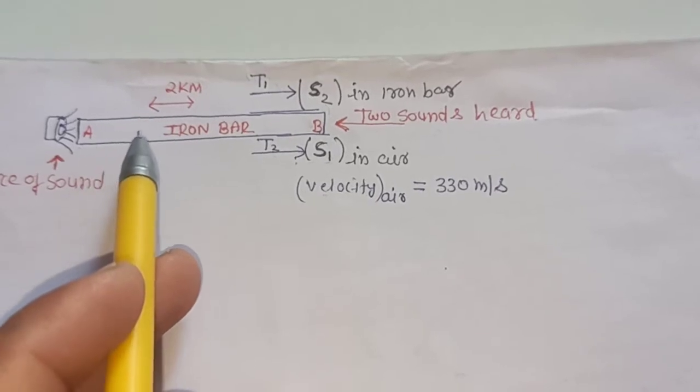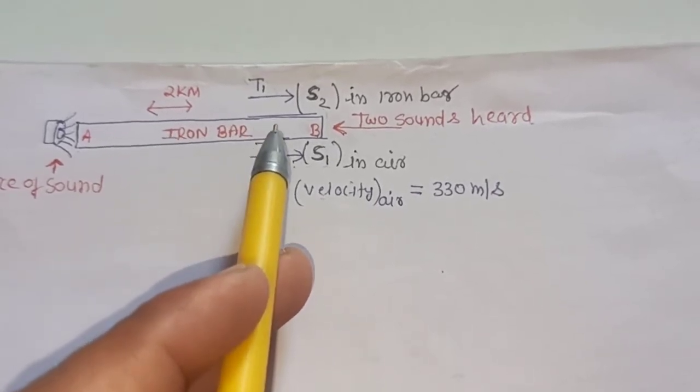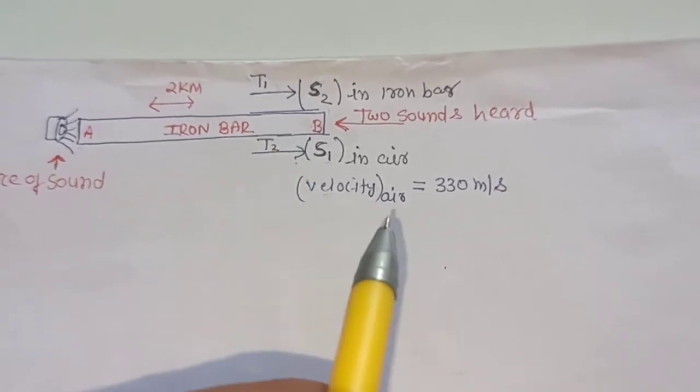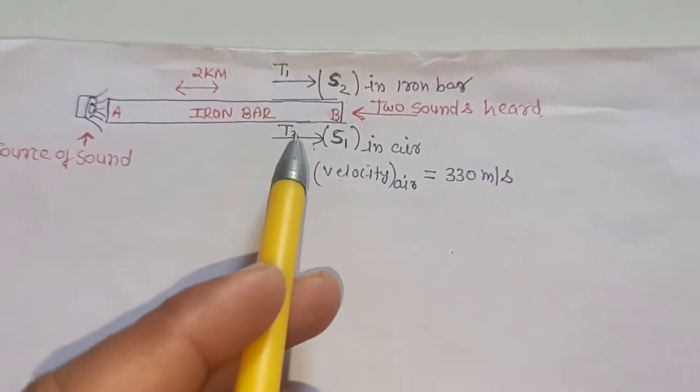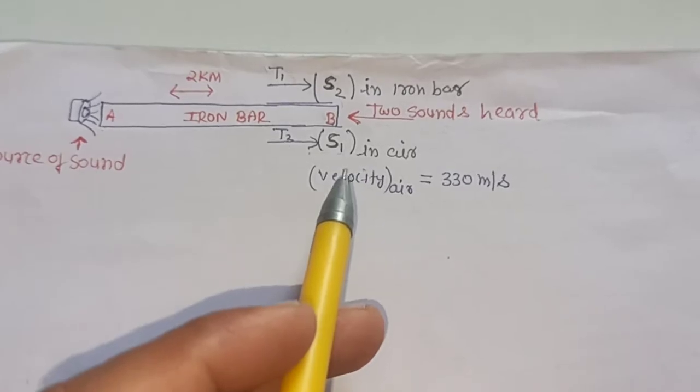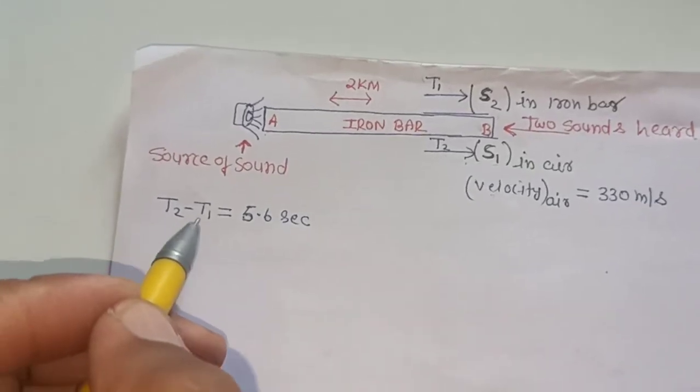We have to find the velocity of sound travel in the iron bar. And we have given the difference of T1 and T2 time interval. T2 minus T1 equals 5.6 second.